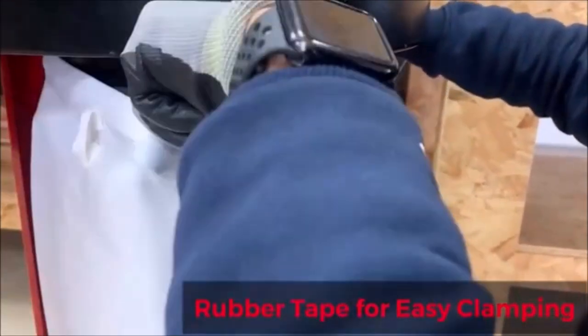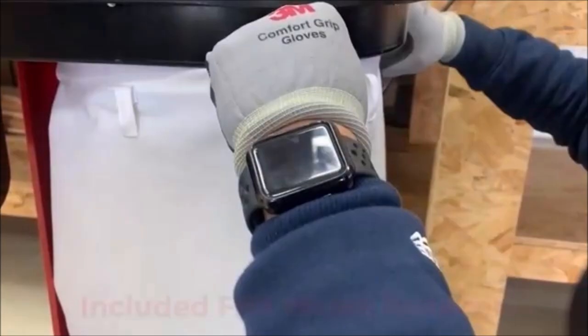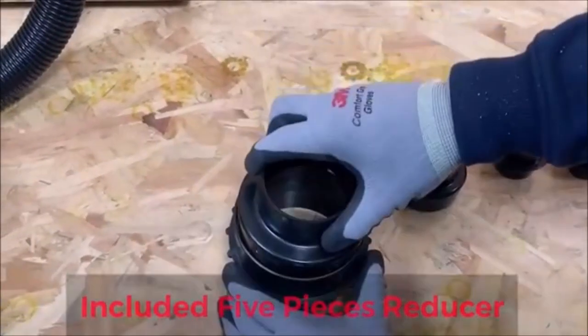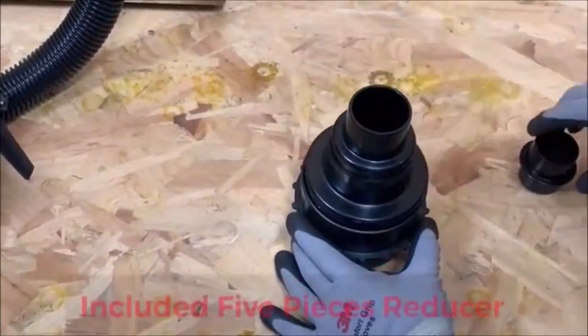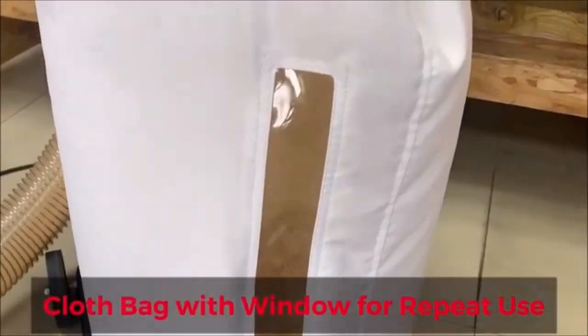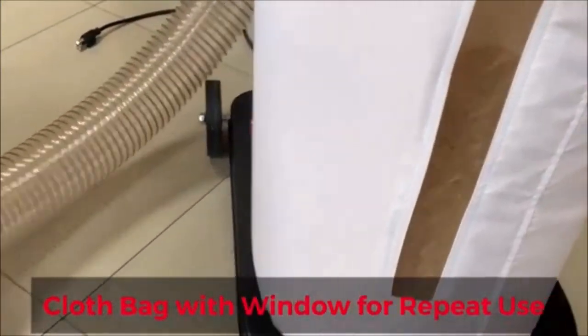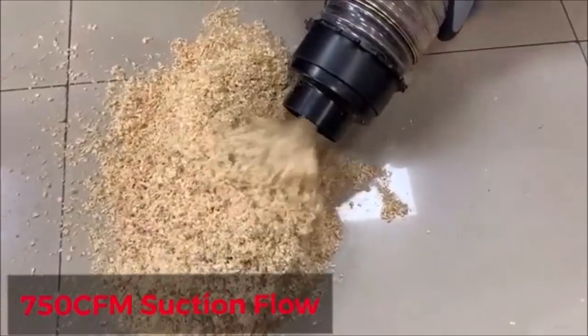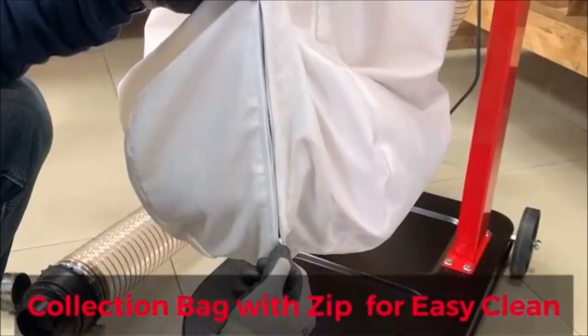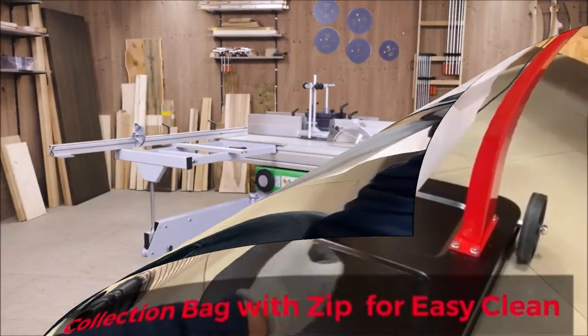The well-designed clasp ensures easy bag installation and removal, while the soft PET bag clamp prioritizes safety and comfort. Its versatile size and caster wheels allow it to function as both a mobile and stationary unit, optimizing shop space.